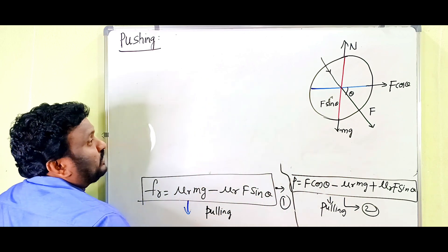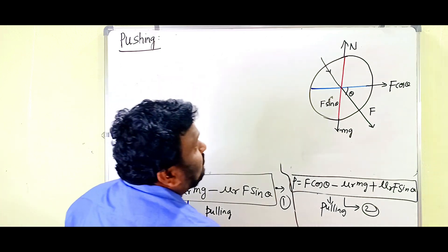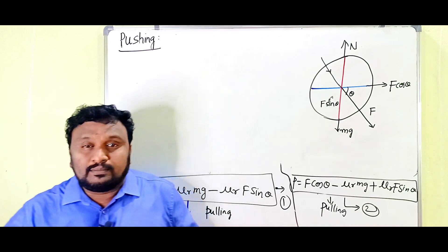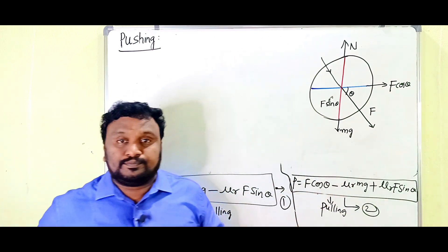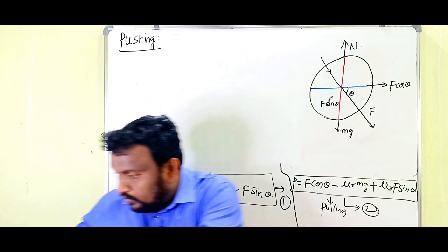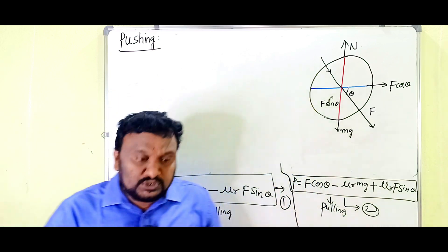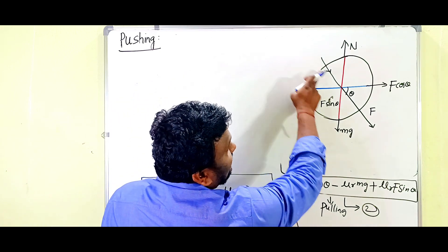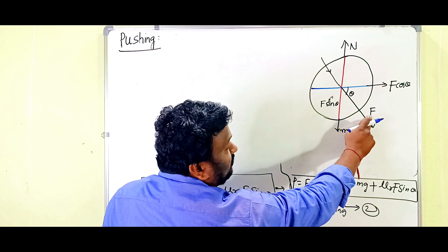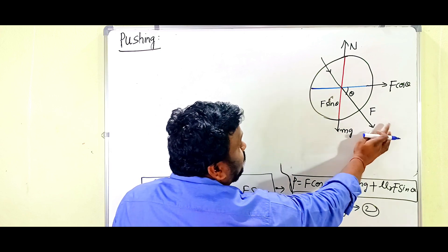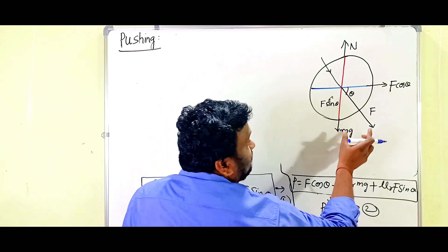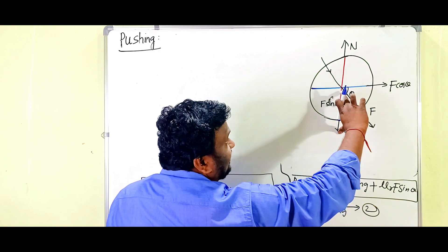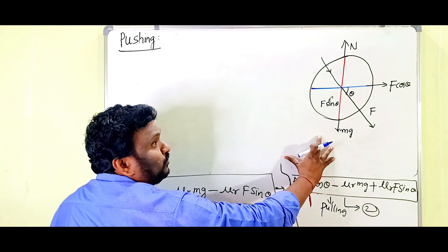Now let's discuss the pushing case. While pushing, we push the roller from the back side. For pushing, the applied force F is in the direction from behind. That force is also divided into two components: F cos theta (horizontal component) and F sin theta (vertical component).